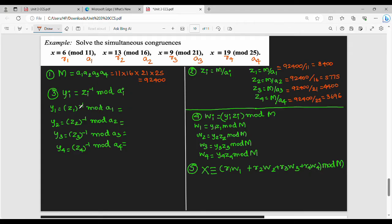Next step number three: what do we do? Yi is nothing but zi inverse mod ai. So first, Y1: previous step number z1 inverse. Z1 is 8,400, so 8,400 inverse mod of a1, a1 value 11. This simplifies using Euclidean to 8. Then Y2: z2 inverse, z2 value 5,775 inverse mod of a2, a2 value 16. Using Euclidean, this is 15. Then z3 value, previous step, we do 4,400.